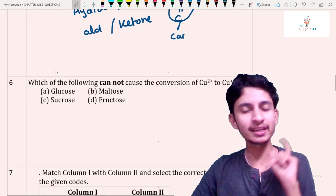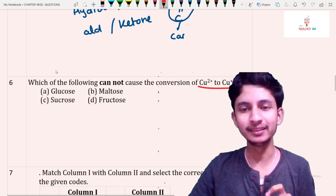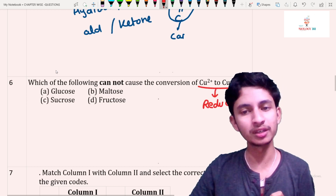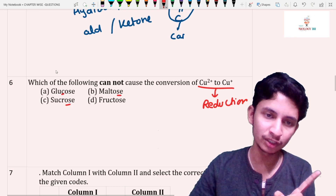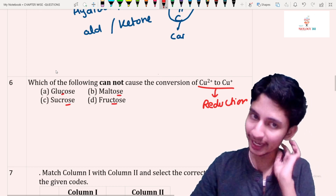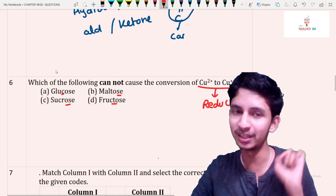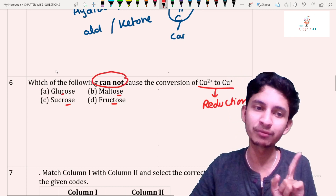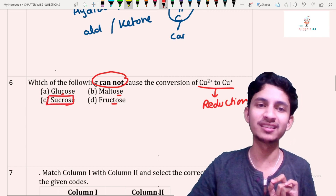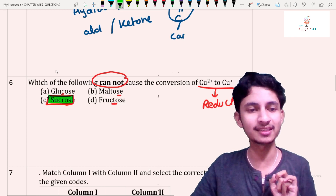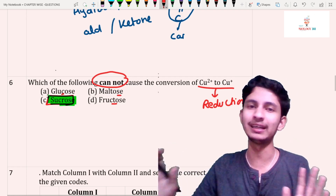Question number six: which of the following cannot cause the conversion of Cu2+ to Cu+? This conversion is a reduction reaction. The options are glucose, sucrose, maltose, and fructose — all sugars. The question is asking which is a non-reducing sugar. Always remember: sucrose is a non-reducing sugar. So whenever a question asks about non-reducing sugar, the answer is sucrose. This question has been repeated several times.